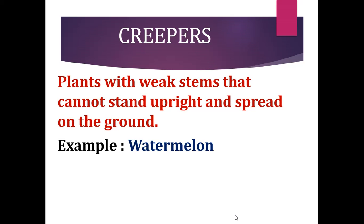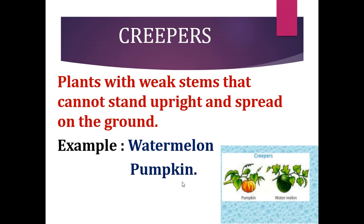Creepers are plants which have a weak stem and cannot stand upright, so they spread on the ground. Unlike climbers that climb on neighboring plants, creepers spread along the ground. Examples of creepers are watermelon and pumpkin.